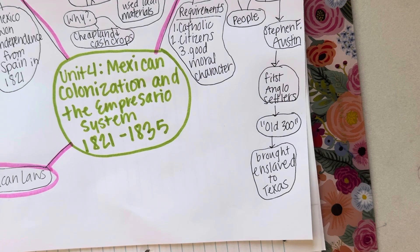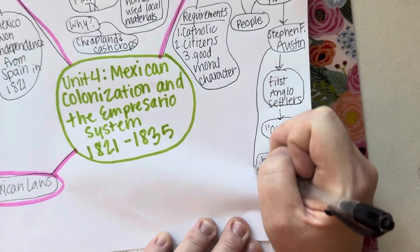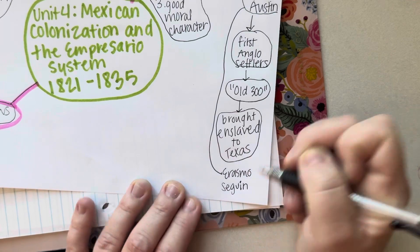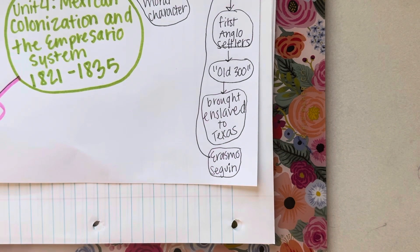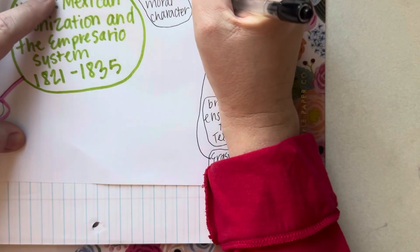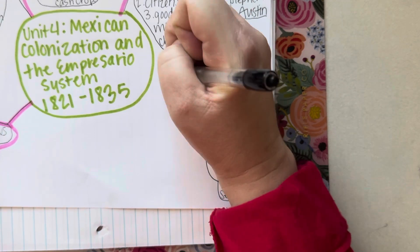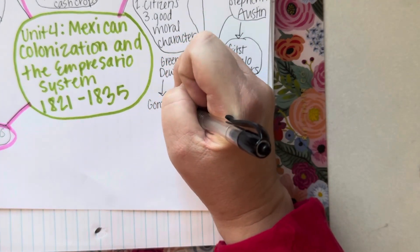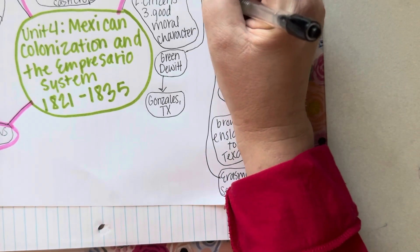A friend of Stephen F. Austin's that helped locate the colony was Erasmo Seguin. He also helps create Mexican laws, which we'll go to next. He was a Tejano representative of Texas. Other impresarios specifically listed in your notes and in the book: Green DeWitt was one. Green DeWitt establishes the town of Gonzales, Texas — which is where the Texas Revolution is going to start in our next chapter. Spoiler alert.